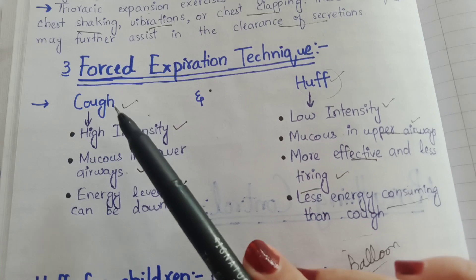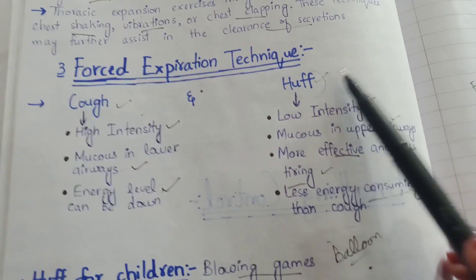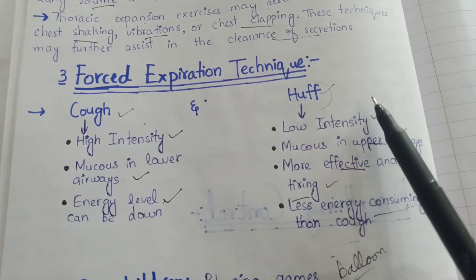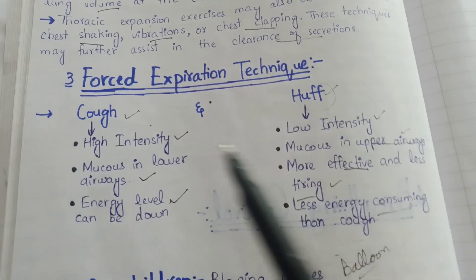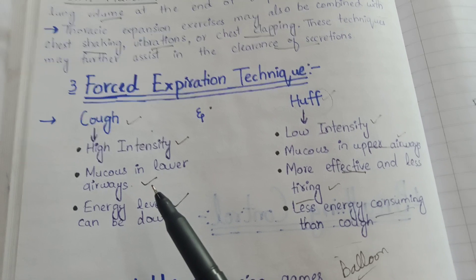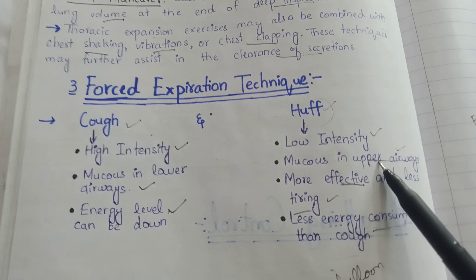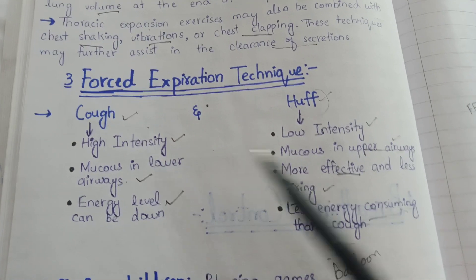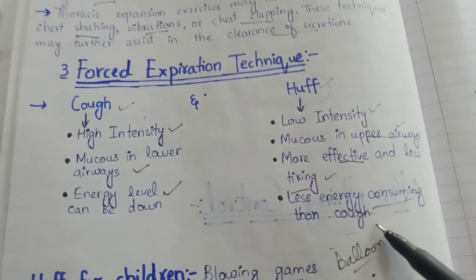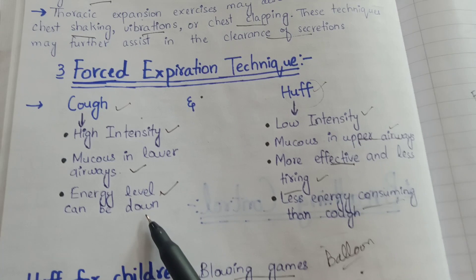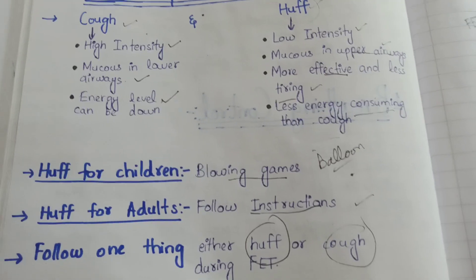The last component is forced expiration technique, which includes cuff and huff. Cuff is of high intensity and huff is of low intensity. Huff means to forcefully expire the air out. If we want to remove mucus from lower airways then cuff is done, and if we want to remove mucus from upper airways then huff is done. Huff is more effective, less tiring, and less energy consuming than cuff.